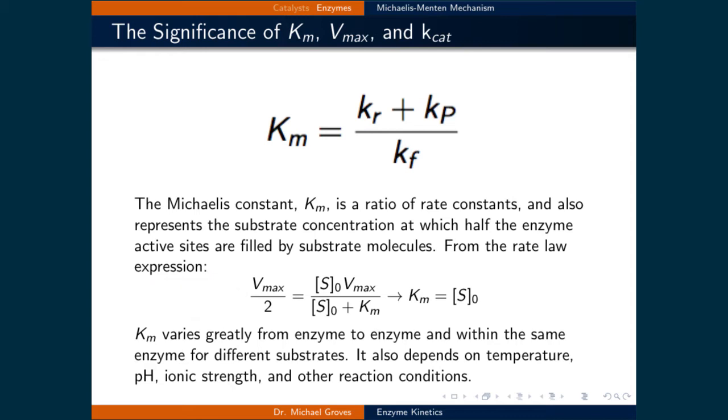The Michaelis constant varies greatly from enzyme to enzyme, and within the same enzyme for different substrates. It also depends on temperature, pH, ionic strength, and other reaction conditions.